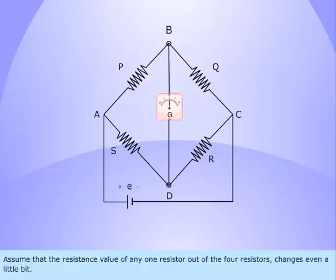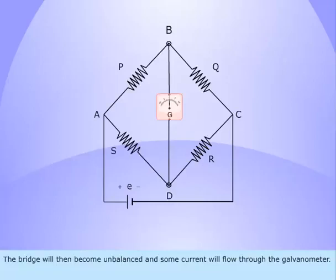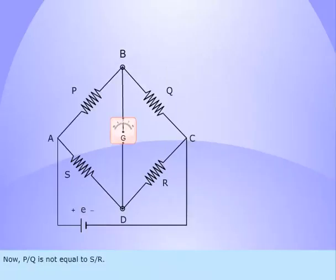Assume that the resistance value of any one resistor out of the four resistors changes even a little bit. The bridge will then become unbalanced and some current will flow through the galvanometer. Now P by Q is not equal to S by R.